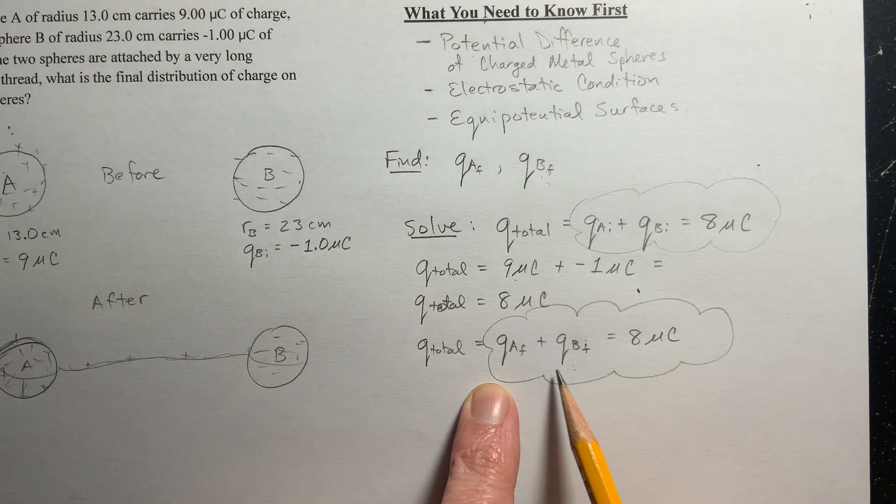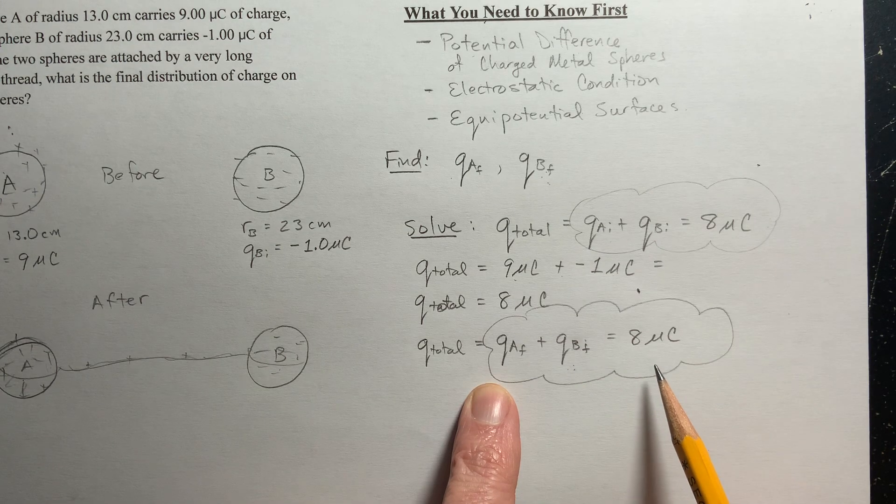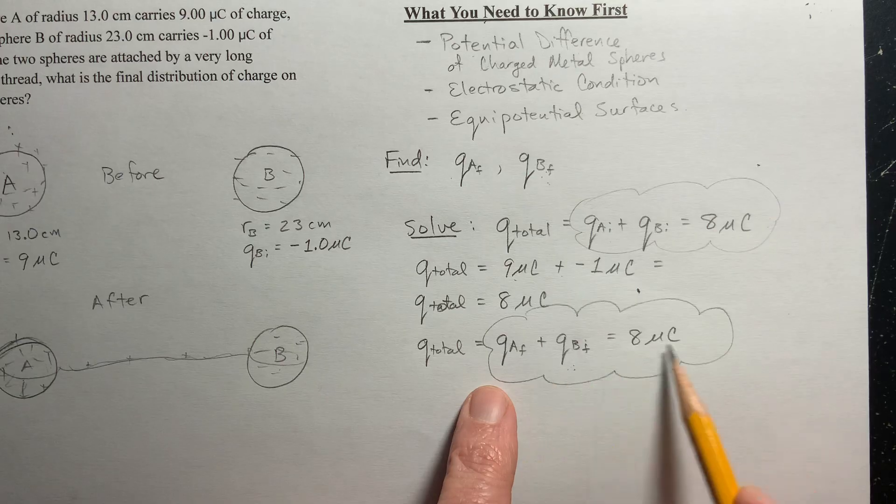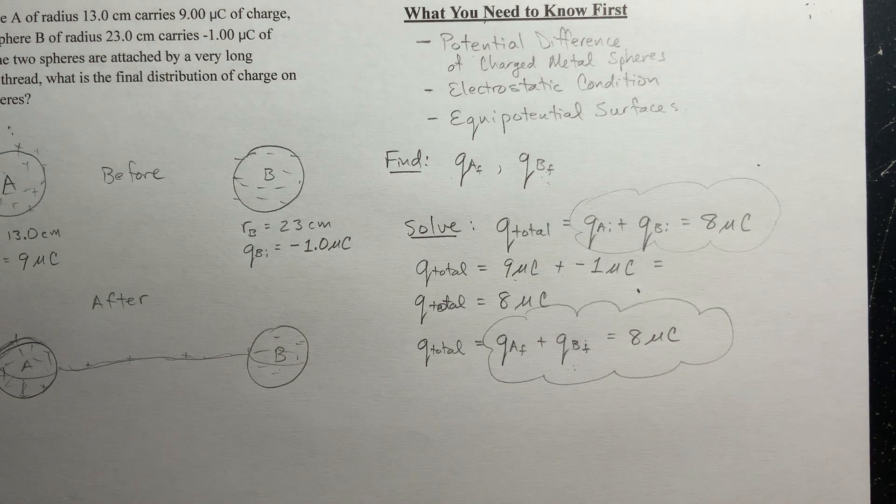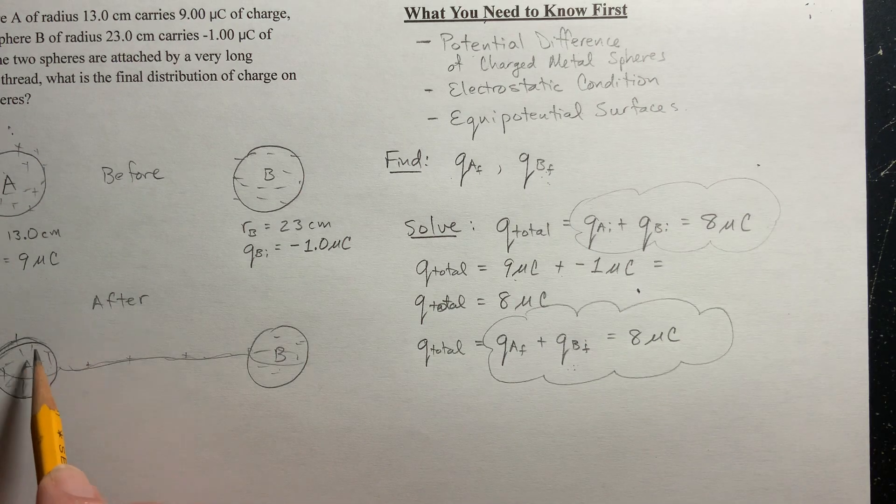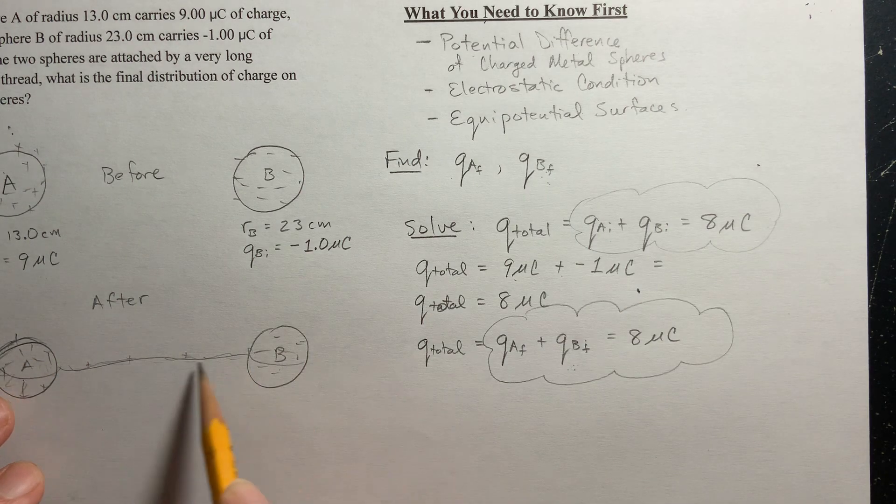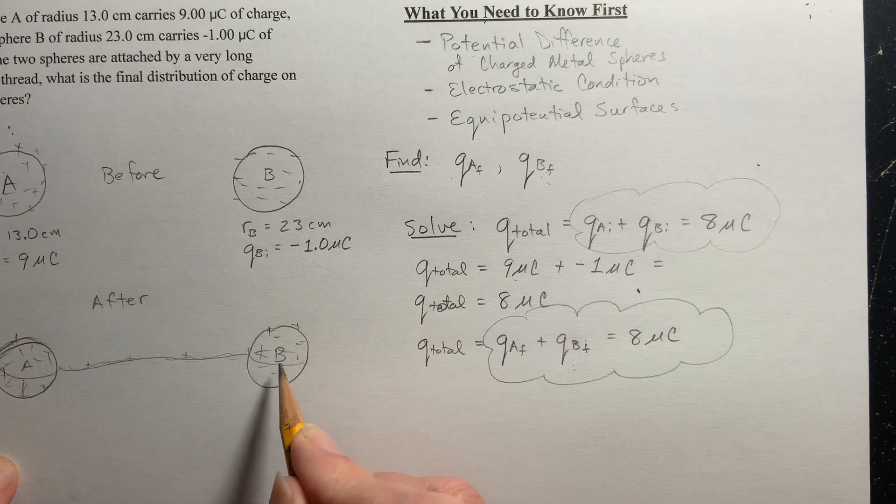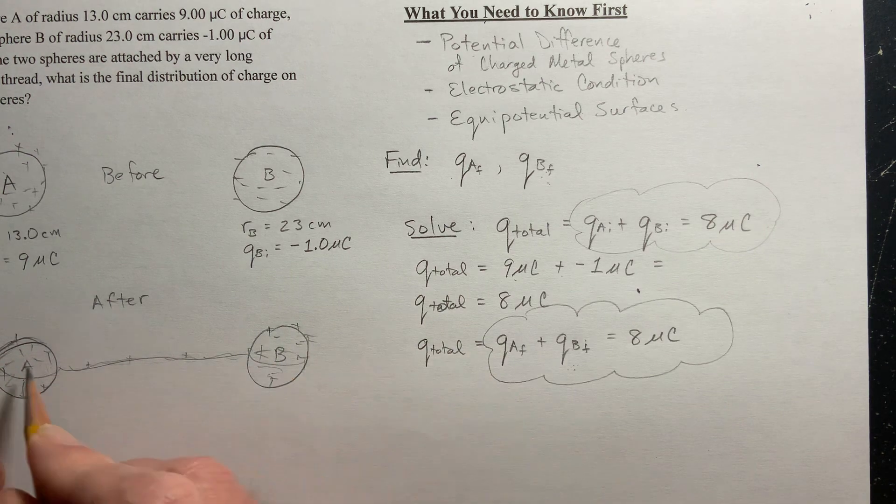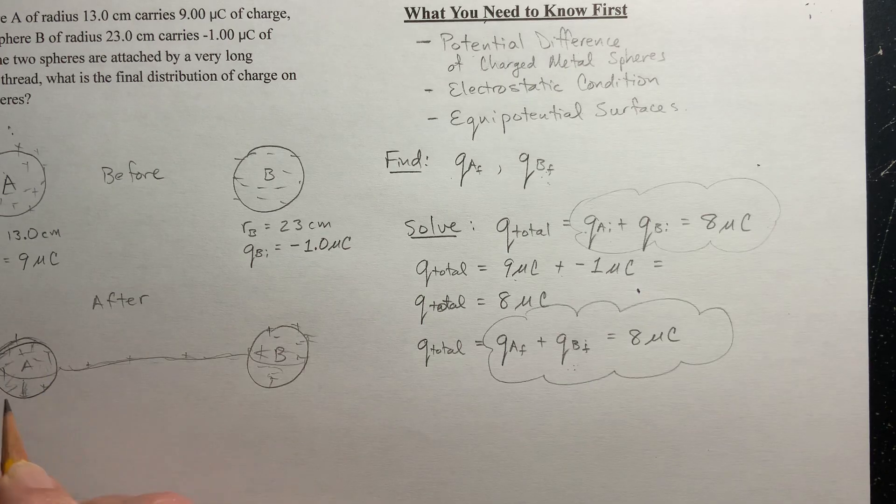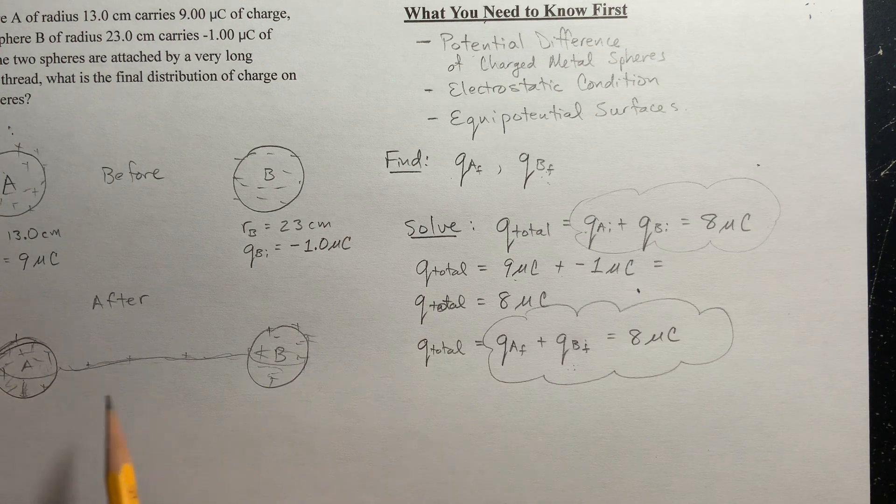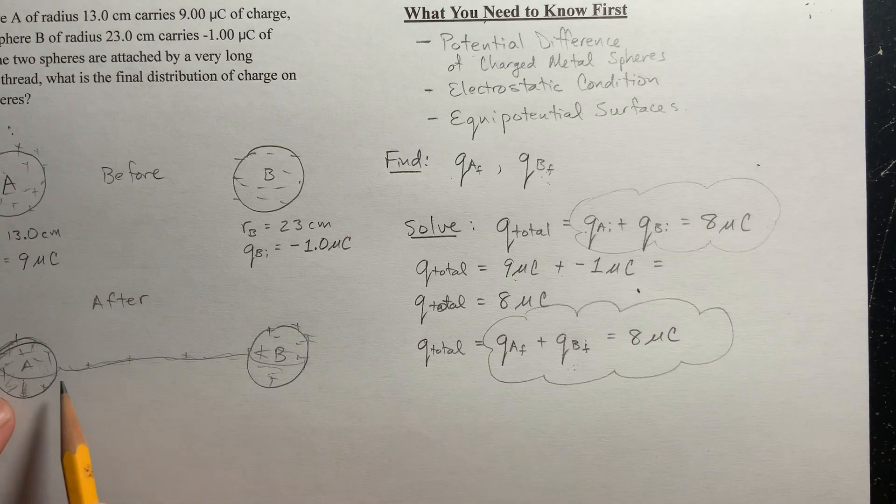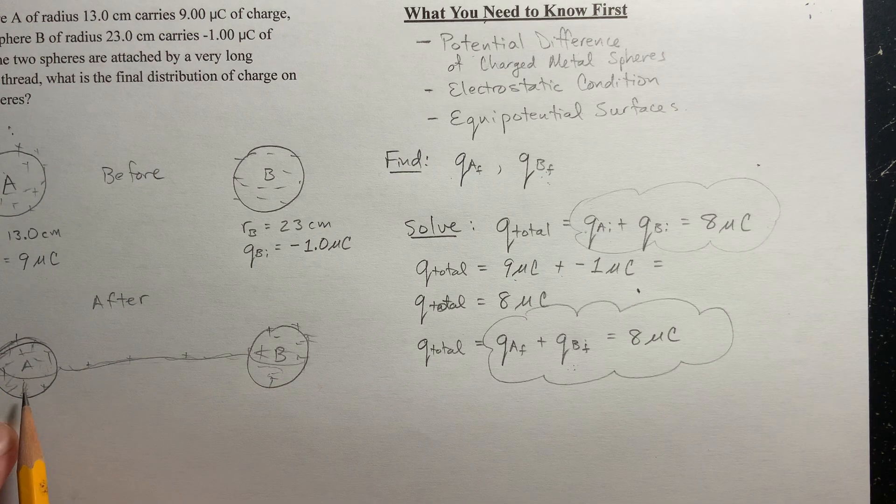Now here, these are my two unknowns. This is what I'm trying to find. But I need another equation. I've got one equation and two unknowns. So now we're going to use another idea. Because what is true, once I let the charge flow through from A to B, and I'm going to actually have some positive charge on B and some positive charge left on A. When does the charge stop flowing?